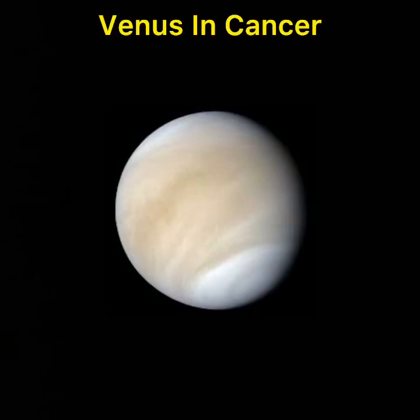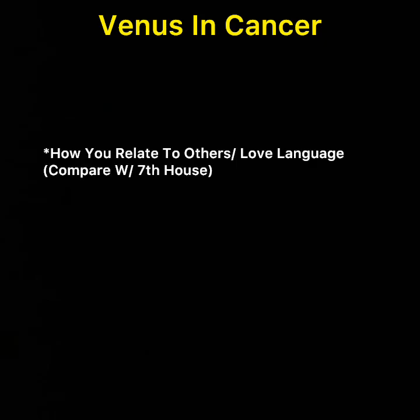What's good, it's your boy. We got Venus in the sign of Cancer and we're going to talk about what this means. Venus is a feminine planet — it can rule over women — but some of the other things that Venus represents is how you relate to others.